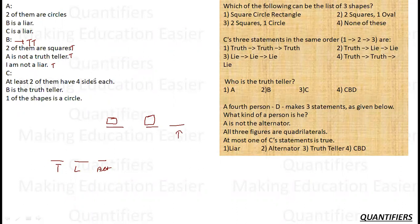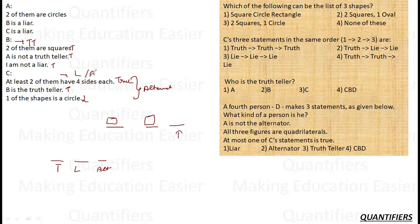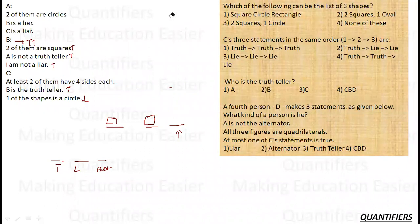Now let's check C's statements. C says at least two of the shapes have four sides each — I can confirm that at least two of them are squares, so this statement is true. C also says B is a truth teller, which is also true since B actually is the truth teller. But there cannot be more than one truth teller, so C must make his third statement a lie in order to be the alternator. C cannot be the liar because both of his first two statements are true, so C is the alternator.